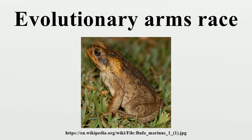Alternatively, the arms race may be between members of the same species, as in the manipulation and sales resistance model of communication, or as in runaway evolution or red queen effects. One example of an evolutionary arms race is in sexual conflict between the sexes, often described with the term Fisherian Runaway.